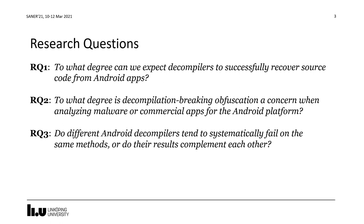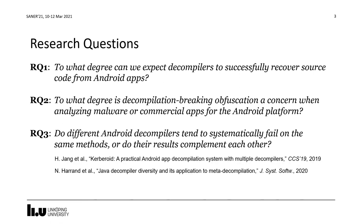For our third research question, we were interested to see if Android decompilers tend to systematically fail on the same methods, or if the results complement each other. This is based on two prior works — one by Young et al. on a smaller number of open source apps, showing that an ensemble of decompilers could often outperform any single decompiler, and also Aron et al. who showed similar results for Java Virtual Machine decompilers. Long story short, we could essentially show that these results also held in our study, so I will focus on questions one and two in the interest of time.